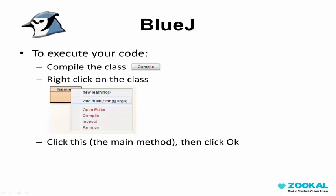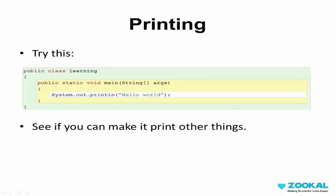Once you've written some code and you'd like to see if it works or what it does, first you'll need to compile the class, and then run the main method. What does compiling do? I won't go into much detail. For the purpose of this subject, just know that it makes sure there are no errors in your code. Finally, we can start talking about the actual code.